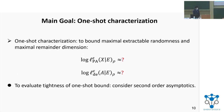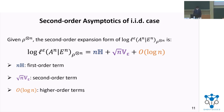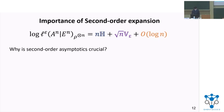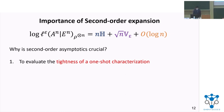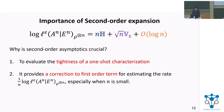To evaluate the tightness of our one-shot characterization, we consider the second-order asymptotics, which is a conventional approach. Given an i.i.d. product state, we expect the operational quantity to be in the following second-order expansion form. Why is the second-order asymptotics crucial? First, we can evaluate the tightness of the one-shot characterization. Second, the second-order term provides a correction to the first-order term for estimating the rate of the operational quantity, especially when n is small.